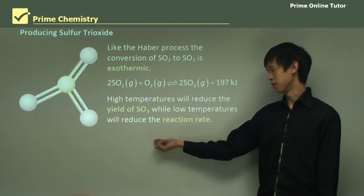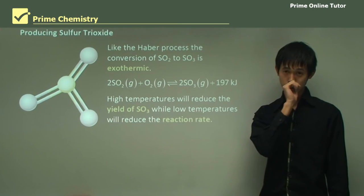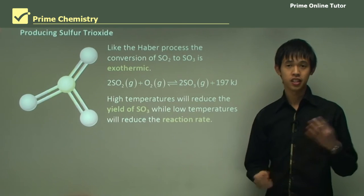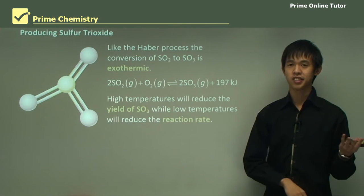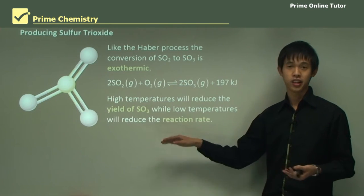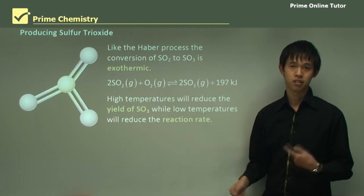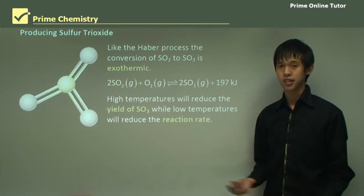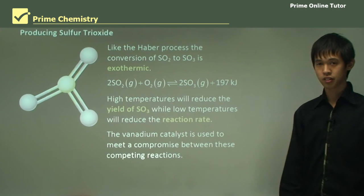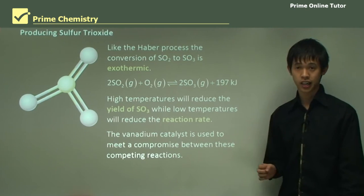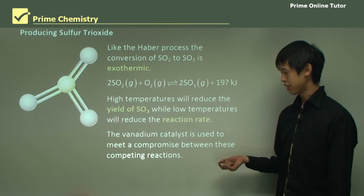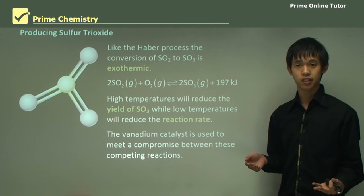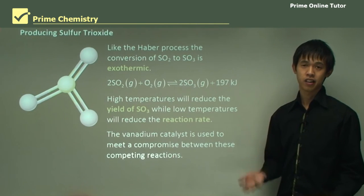While high temperatures reduce yield, low temperatures reduce the reaction rate. So we're always coming into contact with this compromise between increasing yield and decreasing reaction rate — because yield is exponentially related to temperature, which also affects reaction rate. We're always hitting that catch-22. To alleviate this problem, we use a vanadium oxide catalyst, which meets a compromise between these competing factors, increasing yield while also increasing reaction rate.